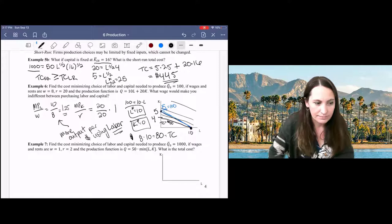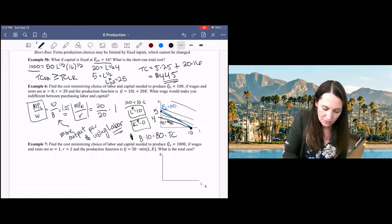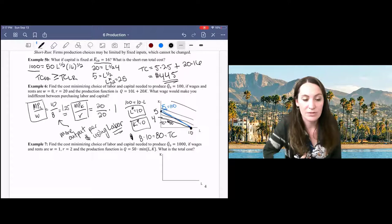So for perfect substitutes, you're going to get the corner solution. You want to compare your bang for your buck, your marginal product per dollar for each input, and then choose the one that gives you the most output per dollar.